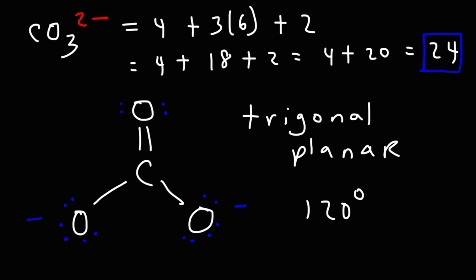For each molecule, it can vary. It can be slightly different. But on a test, if you have a structure that is trigonal planar, the bond angle will be 120 or something close to it.